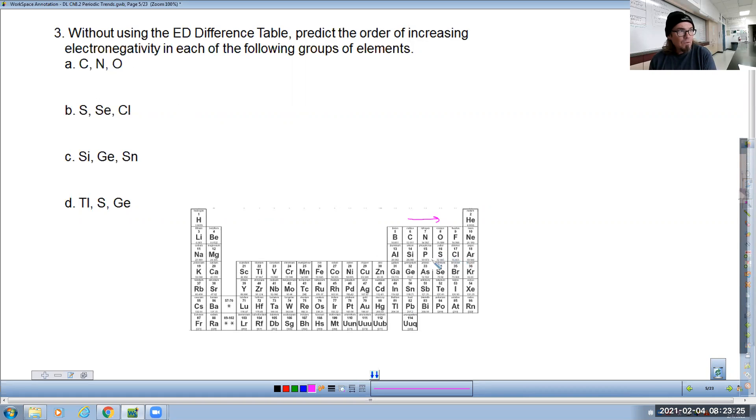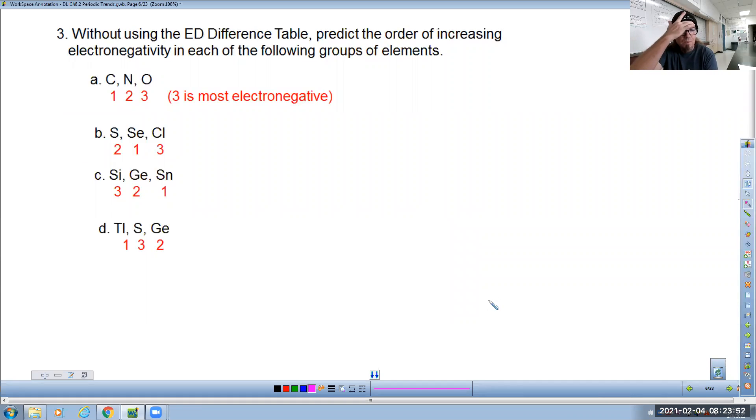Between sulfur, selenium, and chlorine, now you've got to include both trends because it's going to increase as you go towards chlorine. Silicon, germanium, and tin. You're going to say that silicon is the highest because it increases. It is a periodic trend that electronegativity increases as you go up a group and so on and so forth. So you get the idea. Let's just give you the answers to get out of this. I just put some numbers by them.